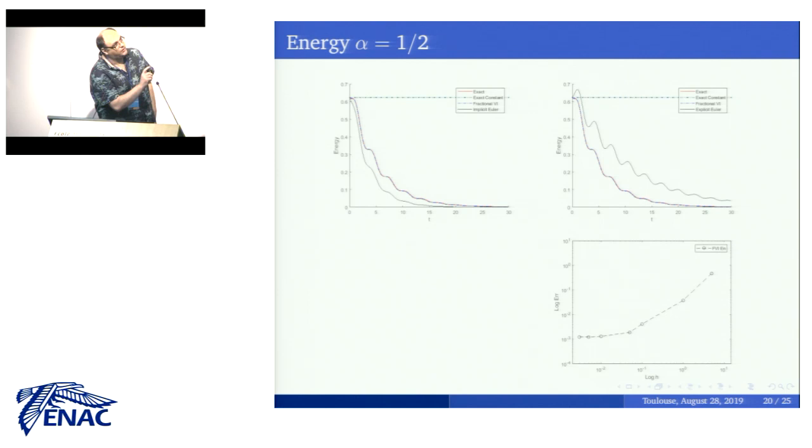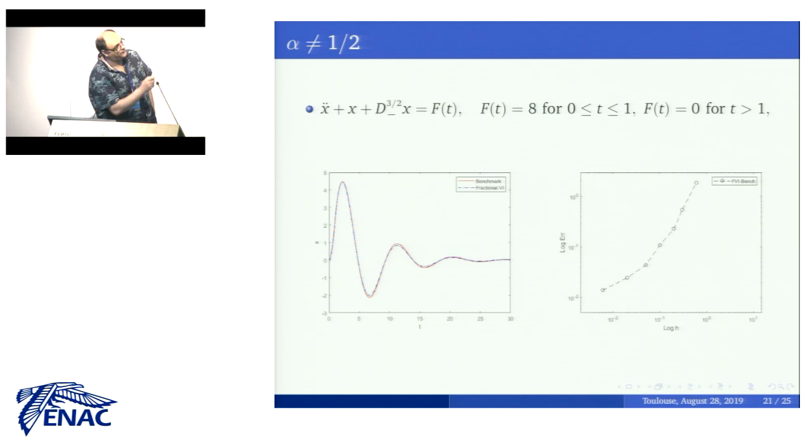This is for alpha equal to one-half. We also run tests for alpha different from one-half, using a different example, and we see that again the tracking is quite nice and the convergence behavior is pretty similar.